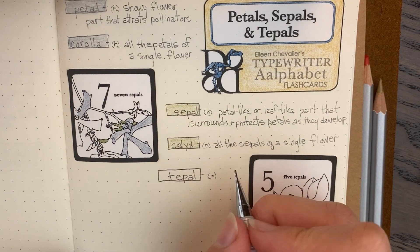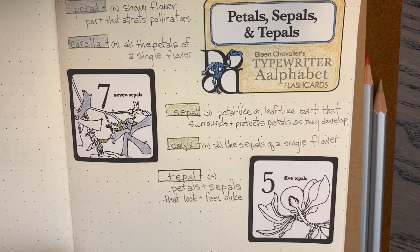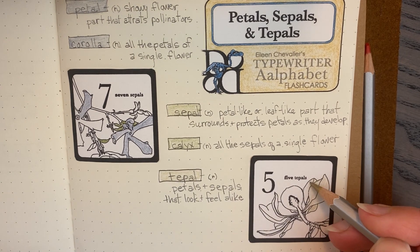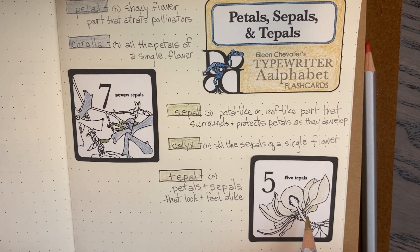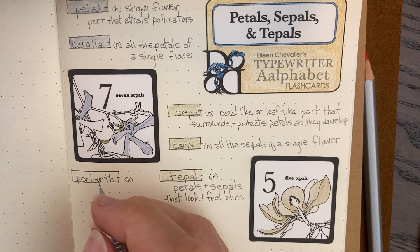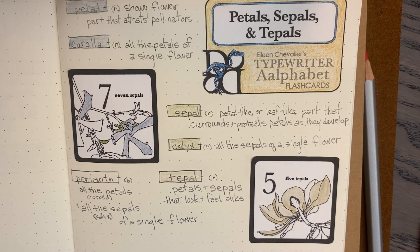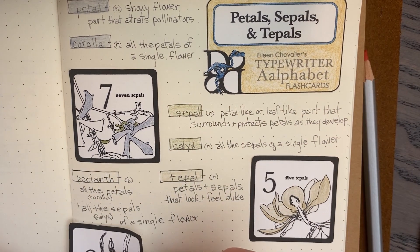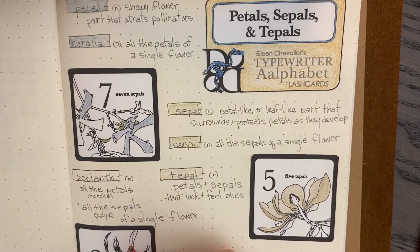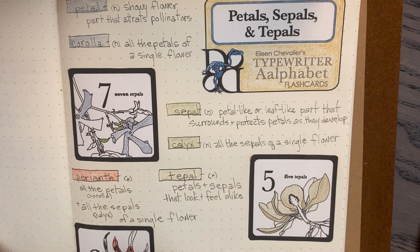Then we have tepals. Either a flower has petals and sepals, or it has tepals. Tepals are petals and sepals that look and feel alike — they just have one name for both. The last definition is perianth: all of the petals (the corolla) and all of the sepals (the calyx) of a flower, and also all the tepals, since they aren't divided out. All of those beautiful showy parts surrounding the male and female parts of the flower.